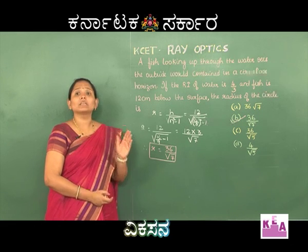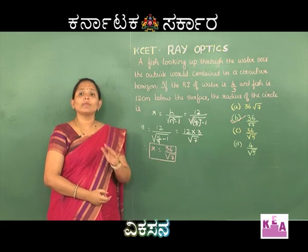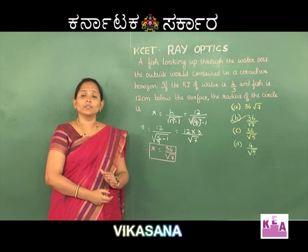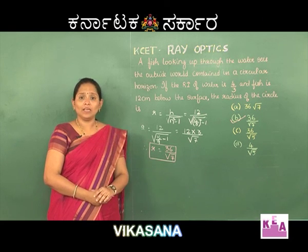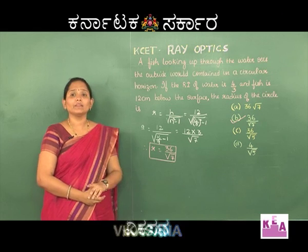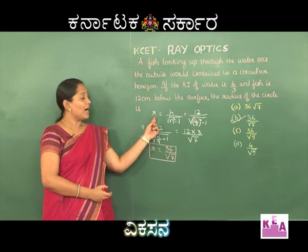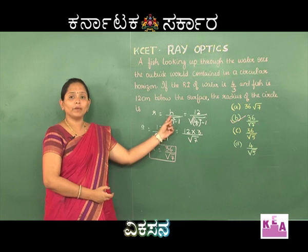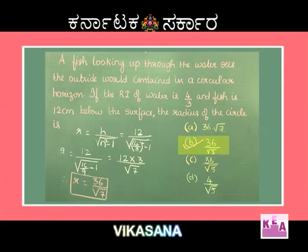Please make note: when the critical angle is given, the radius can be found using R = H × tan(θc). When the refractive index is given, use the formula R = H / √(N² − 1).